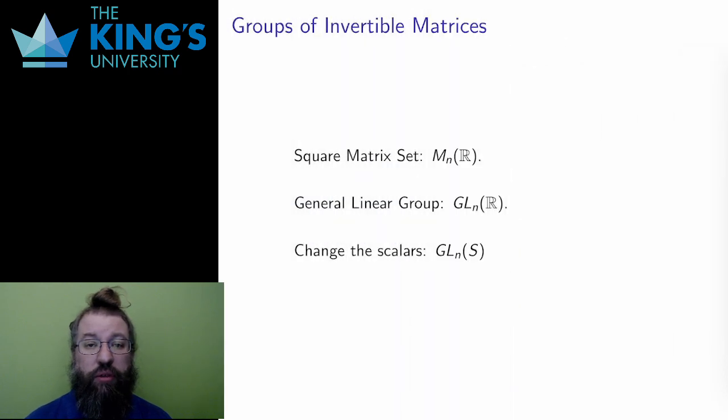Let me finish with some notation. The set of all square n by n matrices with real number coefficients is written M_n(R). Some of these are invertible, some are not. The invertible matrices are a subset. This subset is called the general linear group for historical reasons.